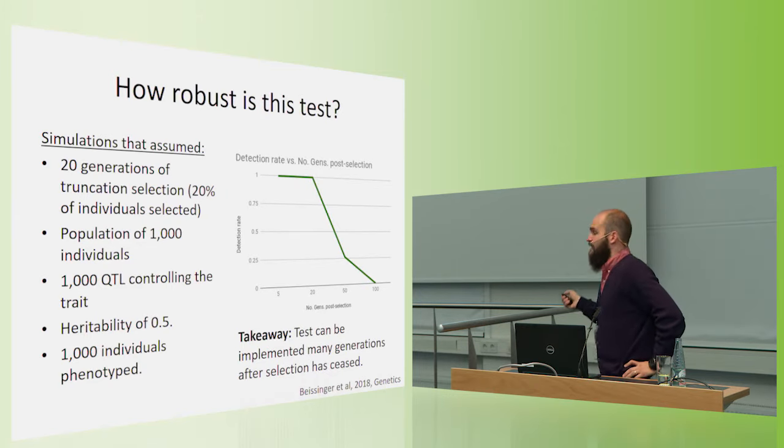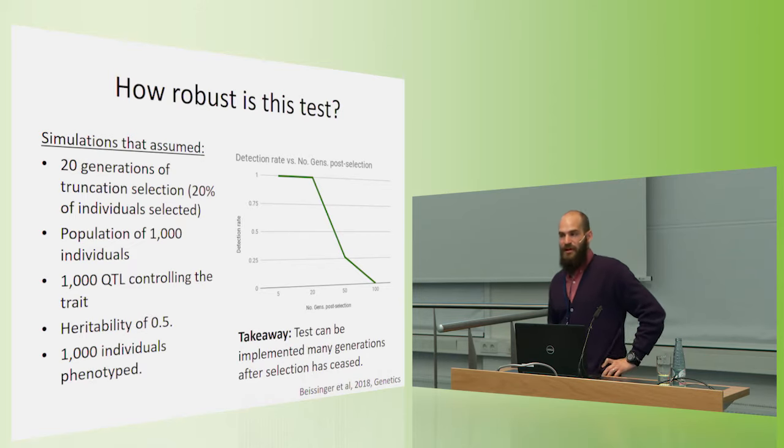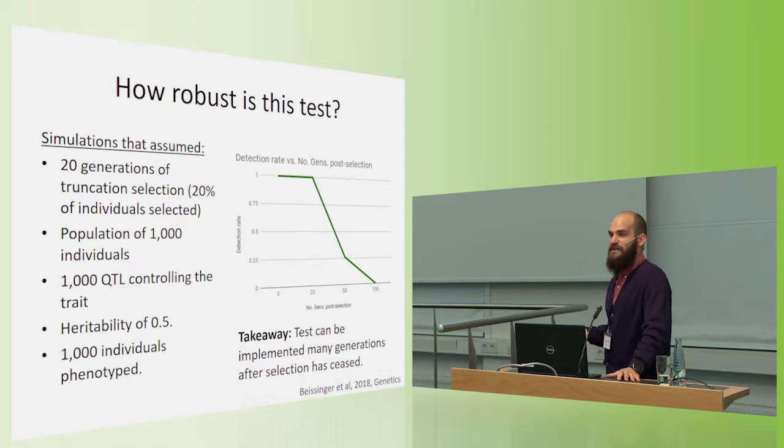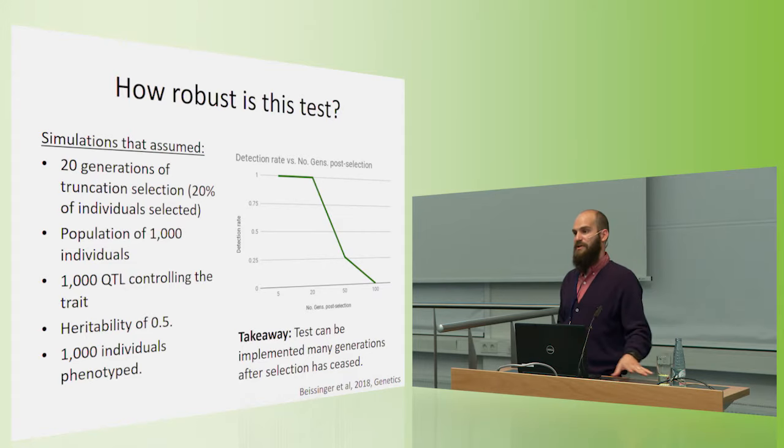And finally, just a neat observation is, if selection has ceased, but the population is still around, we can still continue to identify that selection has occurred for several generations after the breeding program ended. So if we take the population 20 generations post-selection and try to test was it selected for one trait or another, we can still identify that it had been selected for that trait.